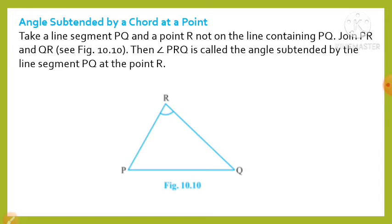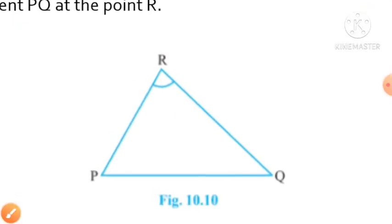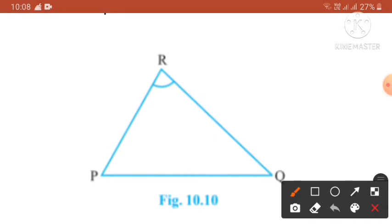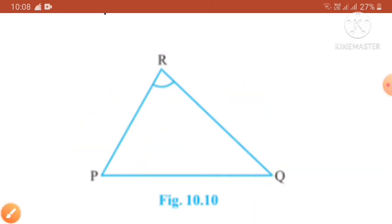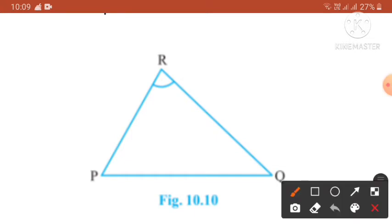The next part is the angle subtended by a chord at a point. Take a line segment PQ and a point R not on the line containing PQ. Join PR and QR as in figure 10.10. Then angle PRQ is known as the angle subtended by the line segment PQ at point R.